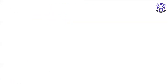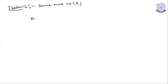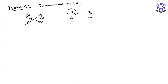Isobars have the same mass number but differ in atomic number. For example, carbon-14 (Z=6) and nitrogen-14 (Z=7) both have mass number 14 but different atomic numbers — these are called isobars.